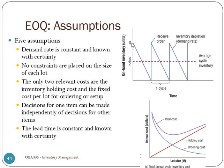That's why the demand at the inventory level can go down as a straight line — otherwise it will be a jagged line. And we know the demand for sure. This is a very strong assumption; it will never be true in real life, but we have to make this assumption for us to calculate EOQ.